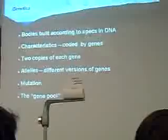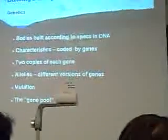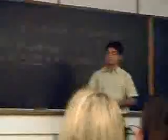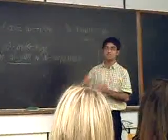Quick introduction to genetics. Our bodies are built according to the specifications in our DNA. The characteristics, such as the body plan, for example, we are tetrapods with a body, four limbs, five appendages at the end, and a head on top. That's all coded by genes.